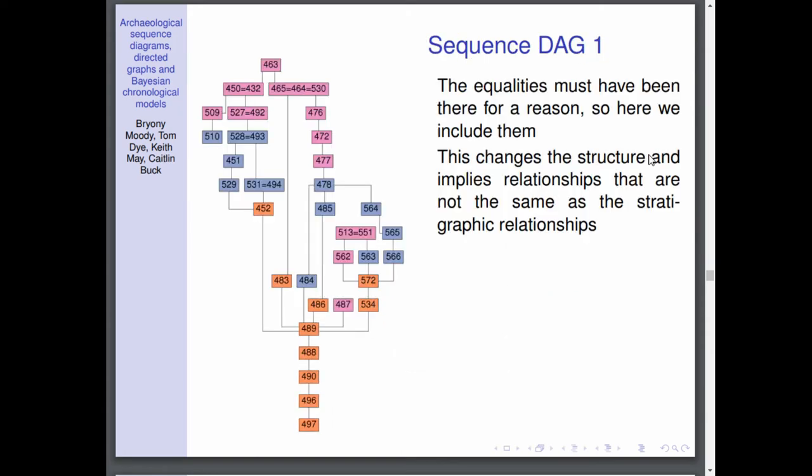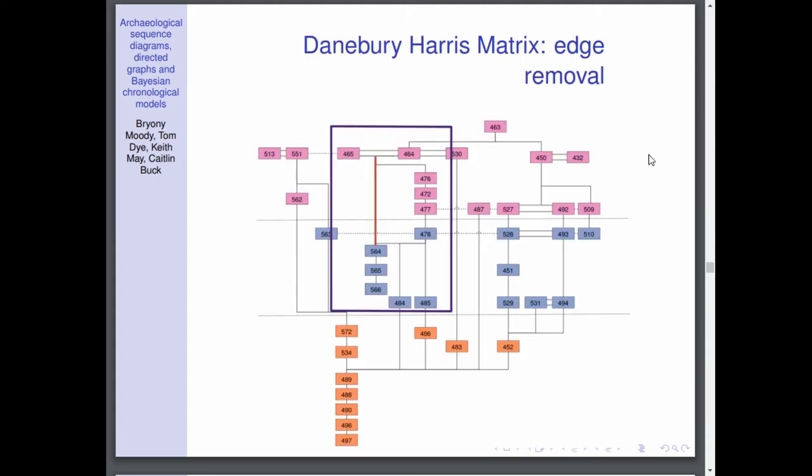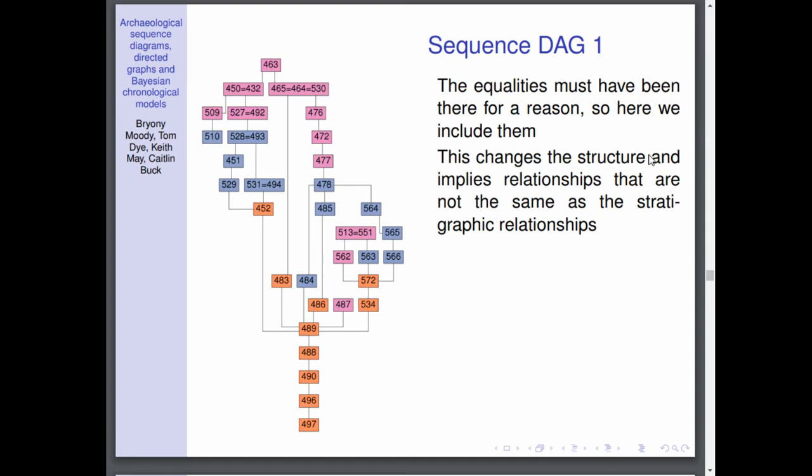So now we go on to a sequence DAG. Those equalities in the previous slides, such as 465 and 464 being once whole, these are clearly useful both temporally and stratigraphically. So we include them here. But this changes the structure of the DAG. This is clearly implying physical relationships that aren't true.